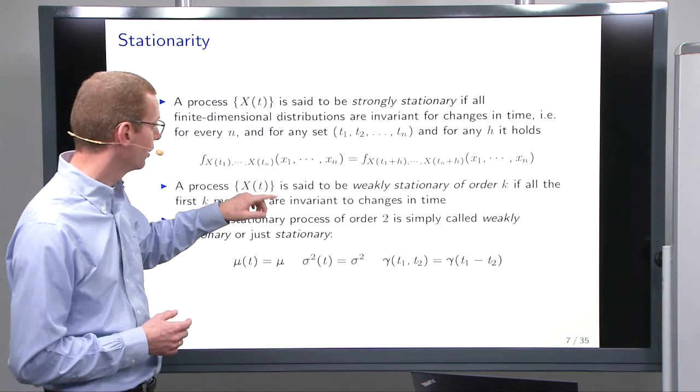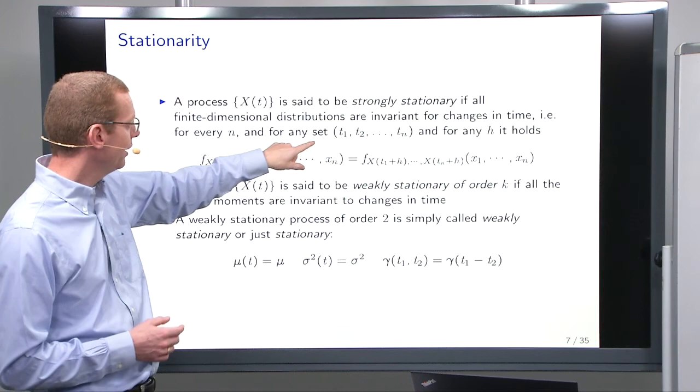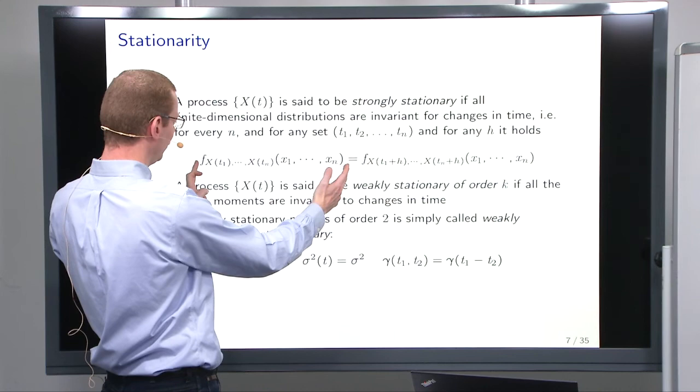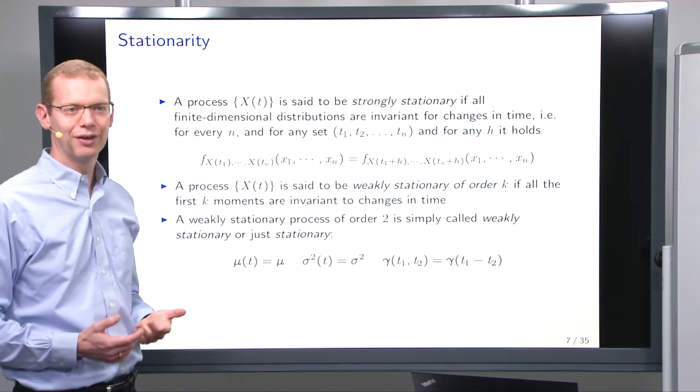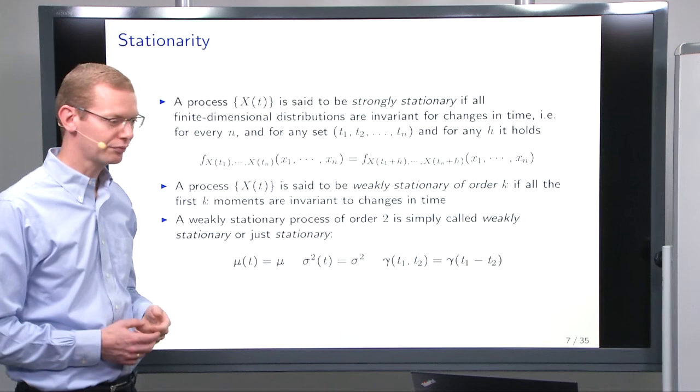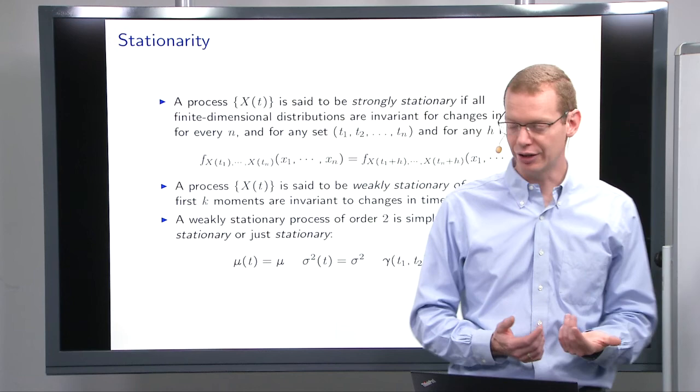And that is if all finite dimensional distributions are invariant to changes in time. So that means you can pick any n time points and any set of time points. And then if the density, the joint density is the same irrespective of a shift in time. Because that's what is happening here. That's the only difference. If the distribution is invariant to shifts in time, then the process is said to be strongly stationary.